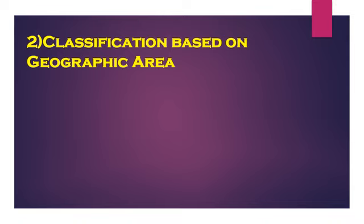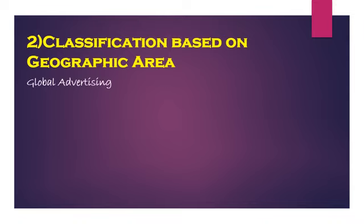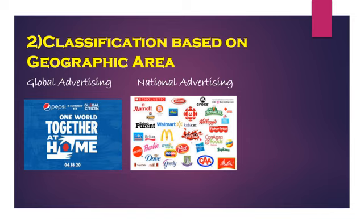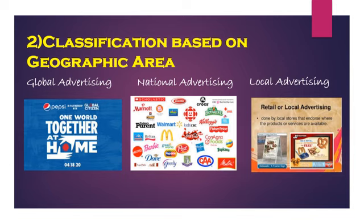Then you have classification based on geographic area. Some advertisements are global — like Pepsi and Coca-Cola, which are advertised worldwide. Health organizations like the WHO also do advertising for the whole world. Then there is national advertising, done within the country with the same logos and same colors everywhere. Then there is local advertising, for a particular area — for example, Easy Day stores that operate locally in the same district.